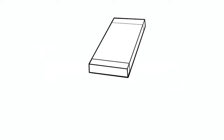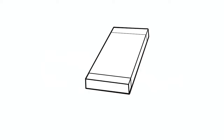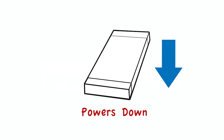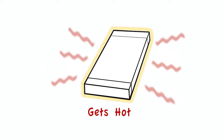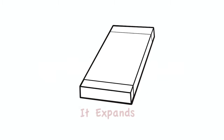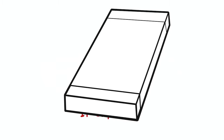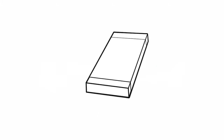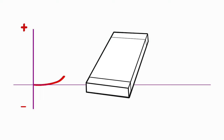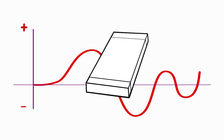A resistor has a tough life. It powers up and it powers down. It gets hot, it cools off, it expands, and it contracts. Over time, all of this activity causes it to change value. Some resistor types change a lot, some not so much, and some hardly at all.